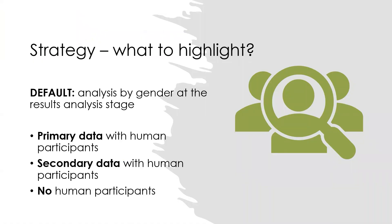To satisfy this criterion by default, you need to disaggregate the analysis of your project by gender, and this happens at the results analysis stage. Still, the strategy for how to approach this requirement will also depend on whether you are going to collect primary data with human participants, work with secondary data with human participants, or if your research has nothing to do with human participants at all. Let's walk through each of these scenarios one by one.